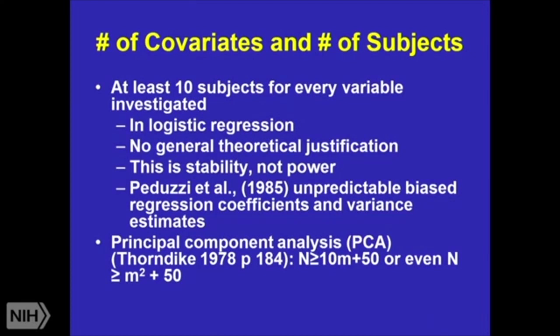Remember stability issues. In logistic regression there's a big discussion — a whole bunch of simulations were done — that you need at least 10 subjects for every variable investigated. If you look at principal components analysis and a lot of other methods that get used, you see anything from 10 to 100. It's all sorts of crazy.